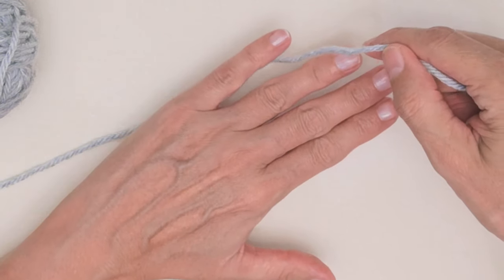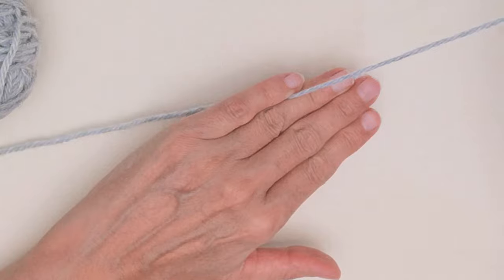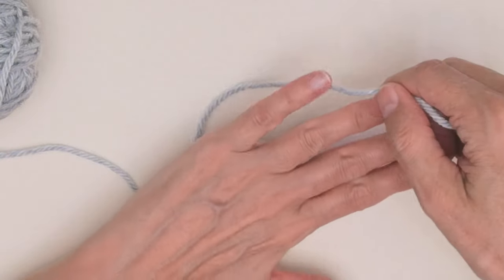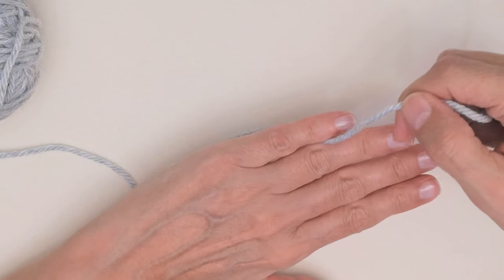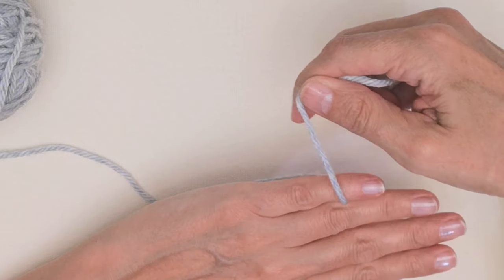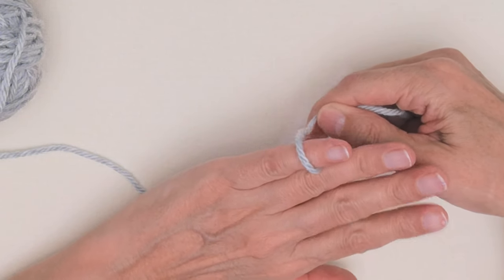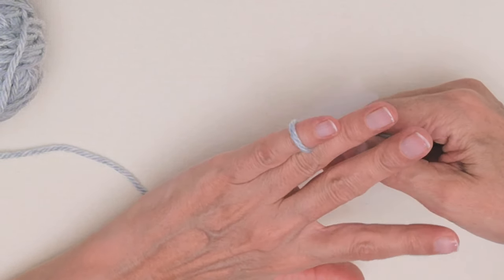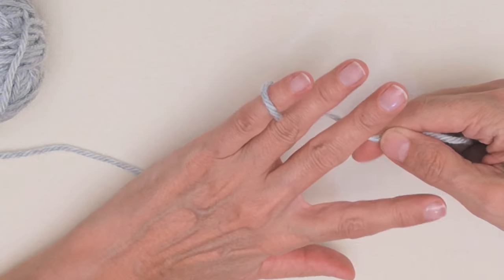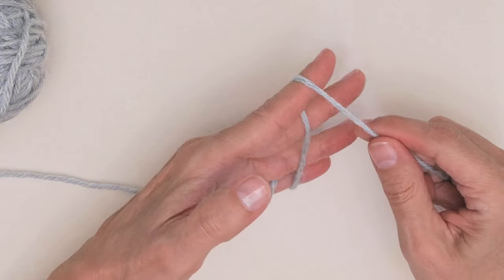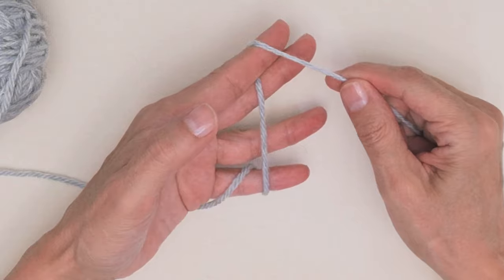In your less dominant hand, place the long working end between your baby finger and ring finger. Then wrap it over top and under your baby finger, under your ring and middle finger, and over your pointer finger. That's it—a simple way to hold your yarn.